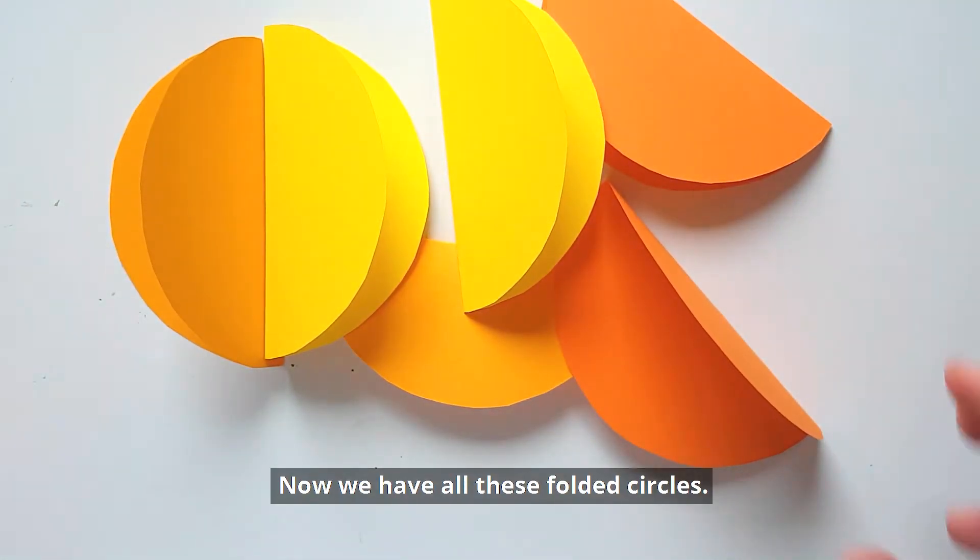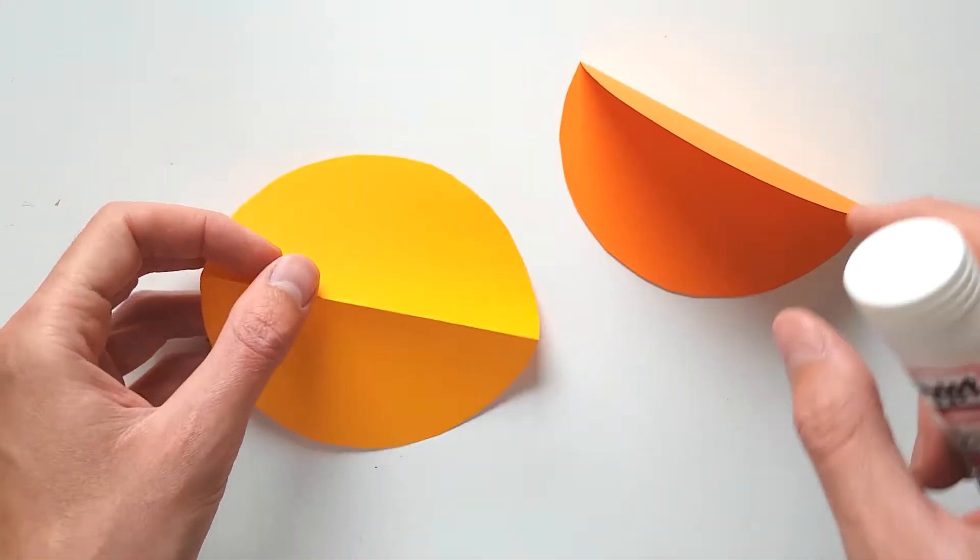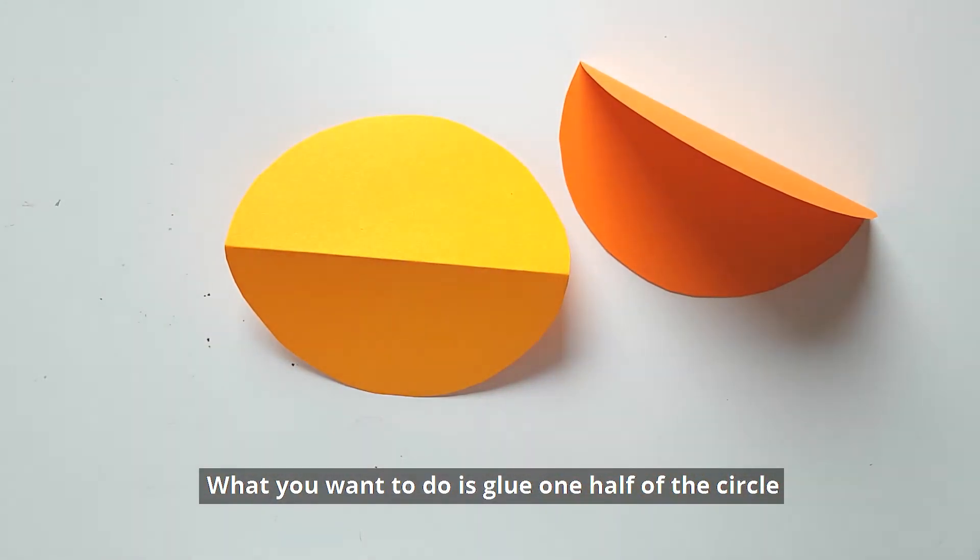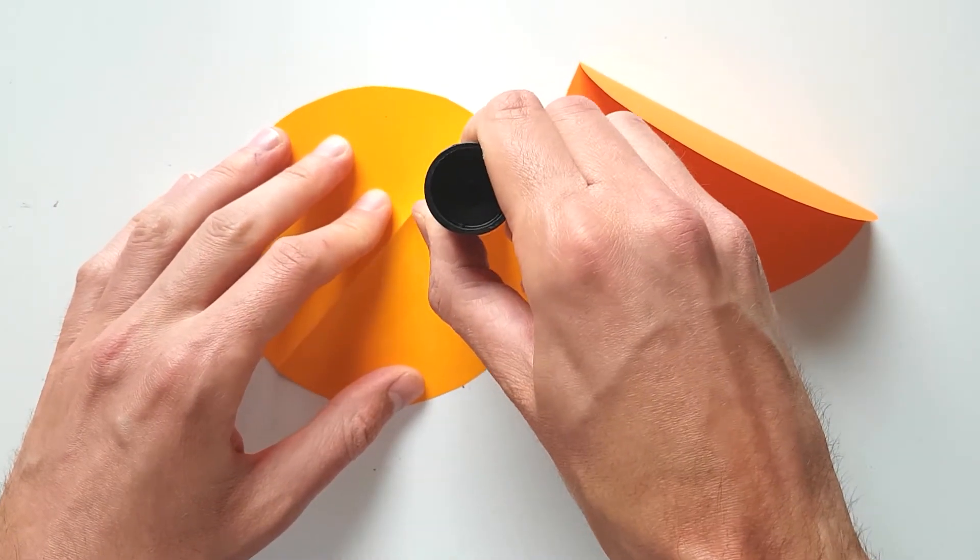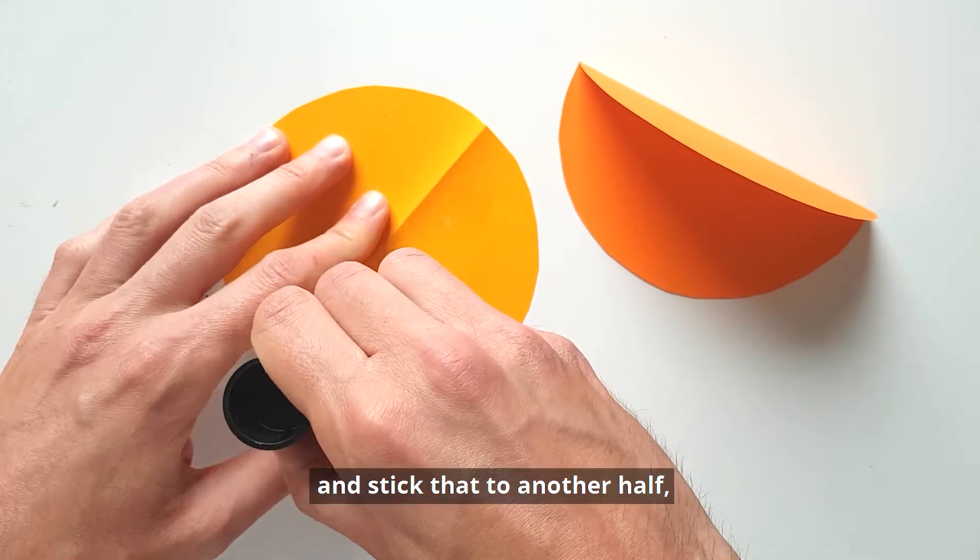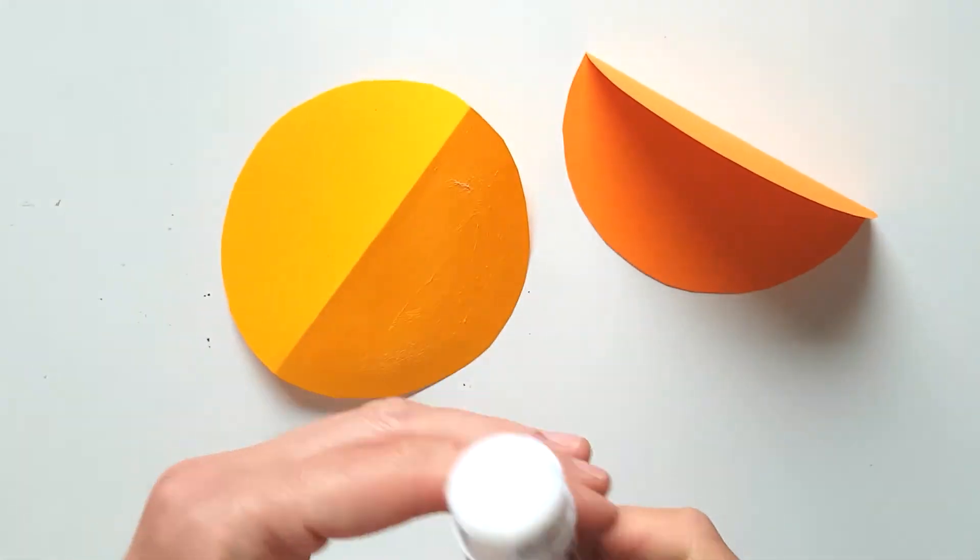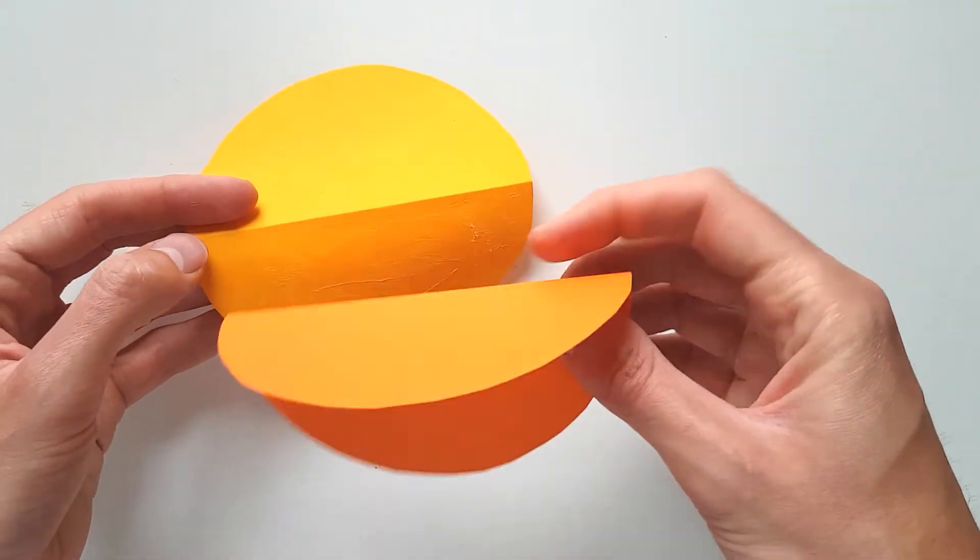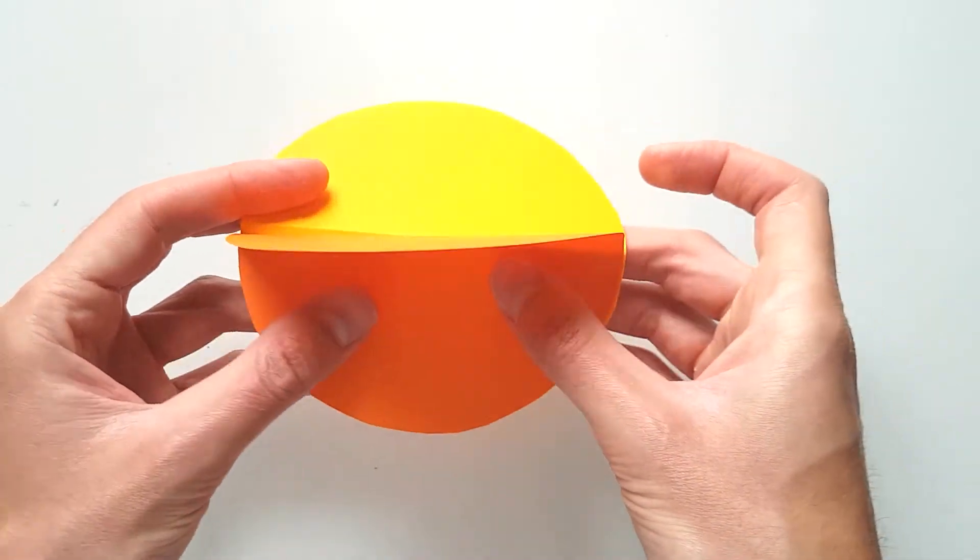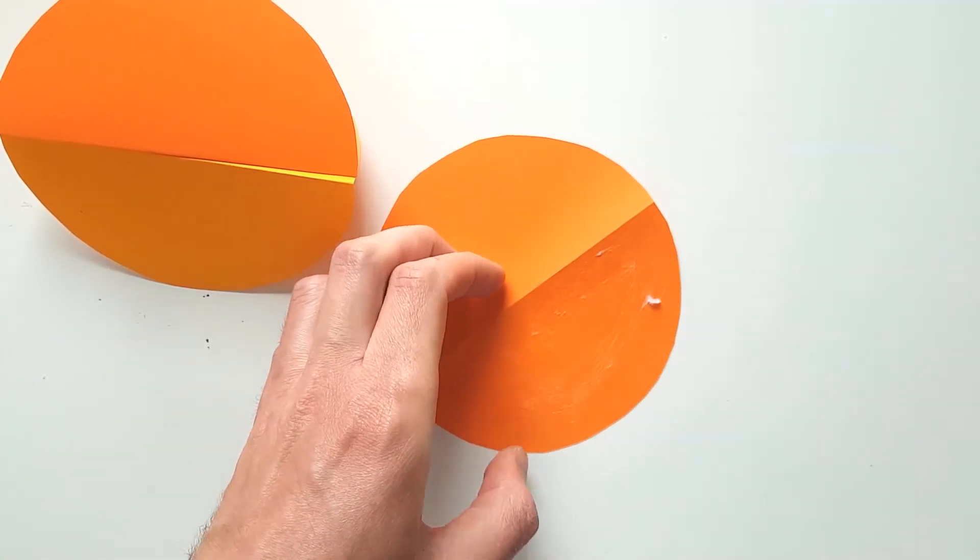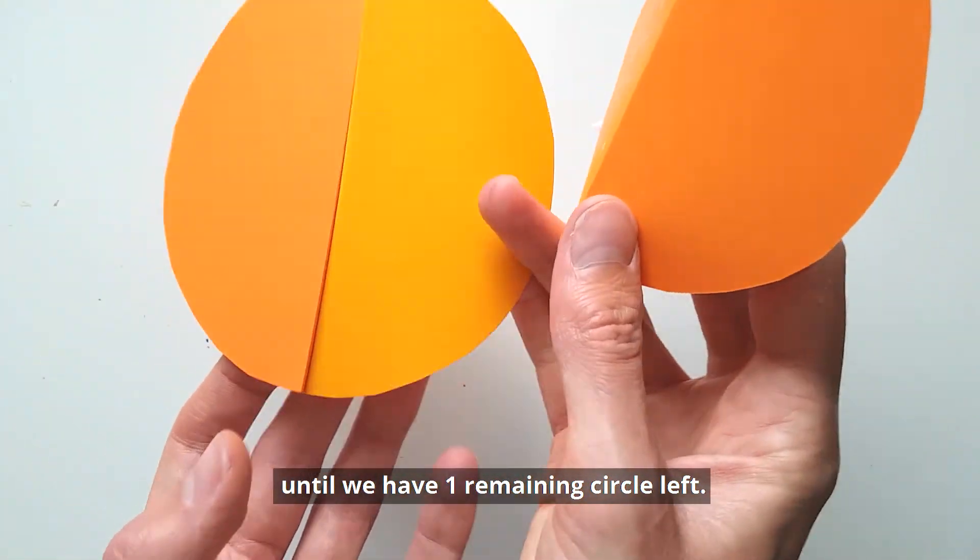Now we have all these folded circles. What we want to do is glue one half of the circle and stick that to another half, like this. We'll continue to do this with the rest of the circles until we have one remaining circle left.